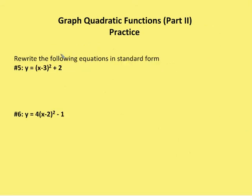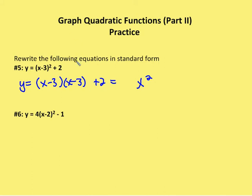Last couple of questions: rewrite the following equations in standard form. For the first one, I'm expanding the squared term: (x−3)(x−3) + 2 = x²−6x+9+2 = x²−6x+11.